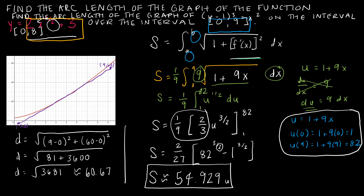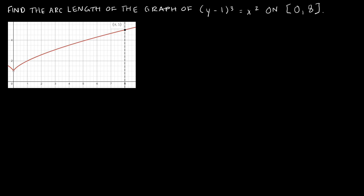Remember this important point: if you're going to keep it in terms of U you have to change the limits of integration; if you're going to change back to 1 plus 9X in terms of X, you don't have to change the limits but you do have to substitute back before evaluating the antiderivative. So let's take a look at another example. In this example we're asked to find the arc length of the graph of (y minus 1) cubed equals X squared over the interval from 0 to 8. I went ahead and graphed this, though it's not as critical since we're just finding the length of an arc.